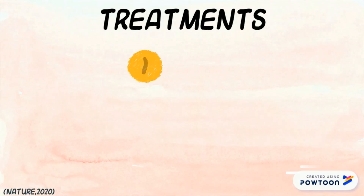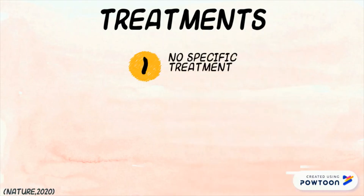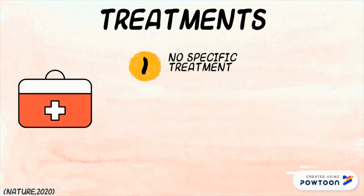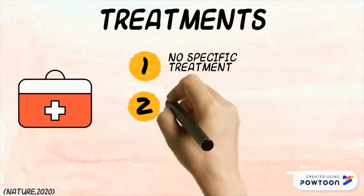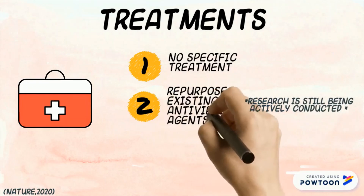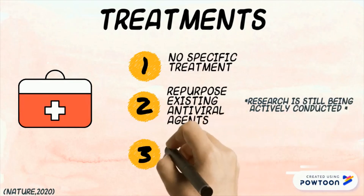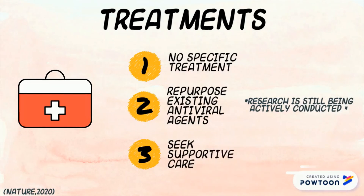There currently is no specific treatment recommended for the 2019 coronavirus infection, according to the World Health Organization. Due to the urgency of this outbreak, scientists are trying to repurpose existing antiviral agents. There are no reliable treatment options yet; however, infected individuals should seek supportive care to relieve their symptoms.